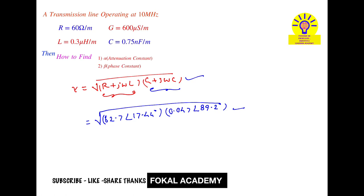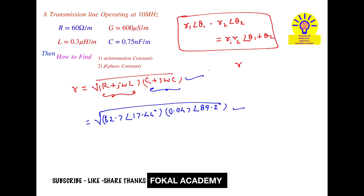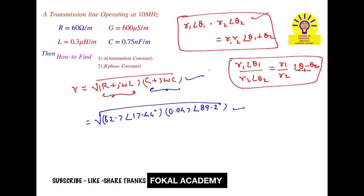When multiplying two polar forms, r₁∠θ₁ × r₂∠θ₂ = r₁r₂∠(θ₁ + θ₂). When dividing, r₁∠θ₁ ÷ r₂∠θ₂ = (r₁/r₂)∠(θ₁ − θ₂). These are the two formulas for multiplication and division between polar forms. Here we have multiplication, so applying this formula gives us 1.72 ∠53.32° under the square root. Calculating directly, the result for the propagation constant gamma becomes 1.72 ∠53.32°.